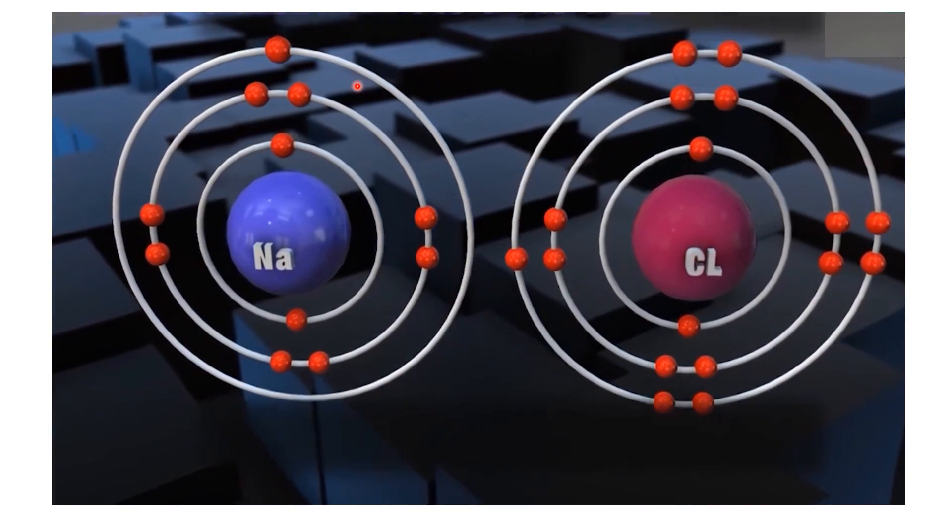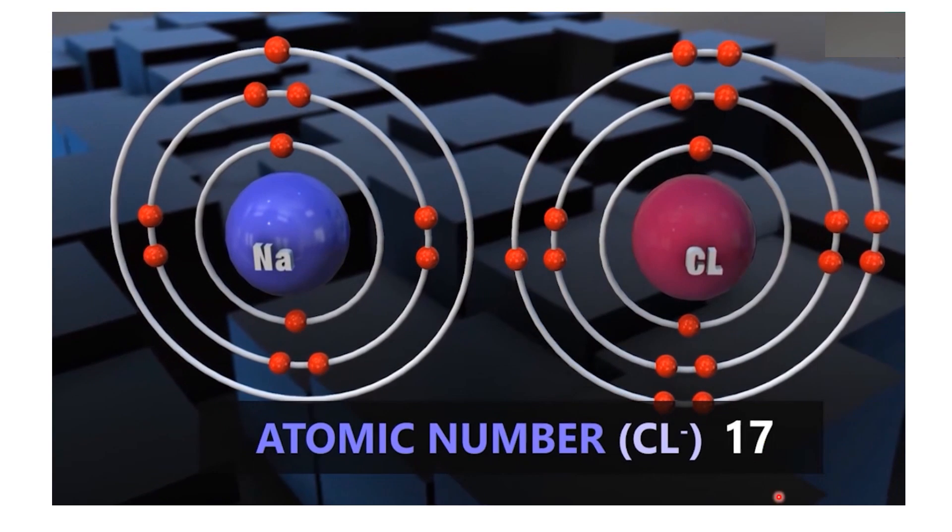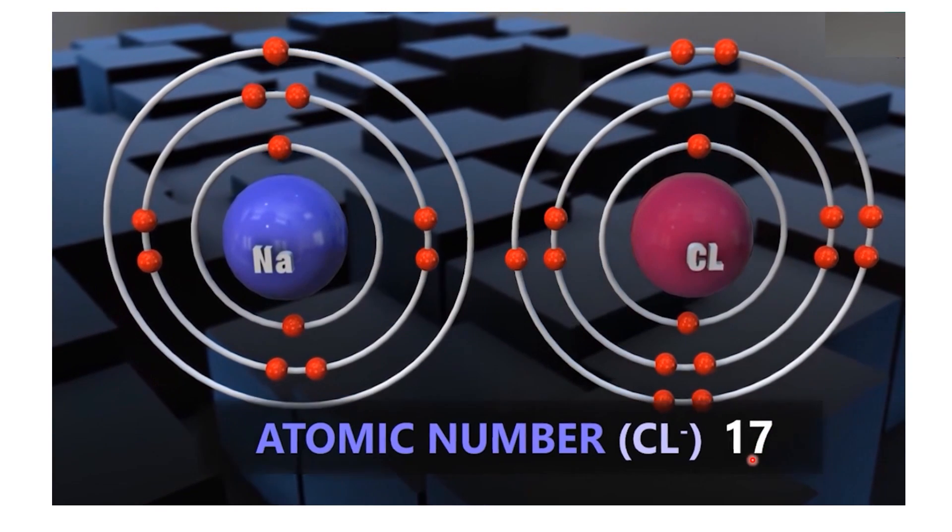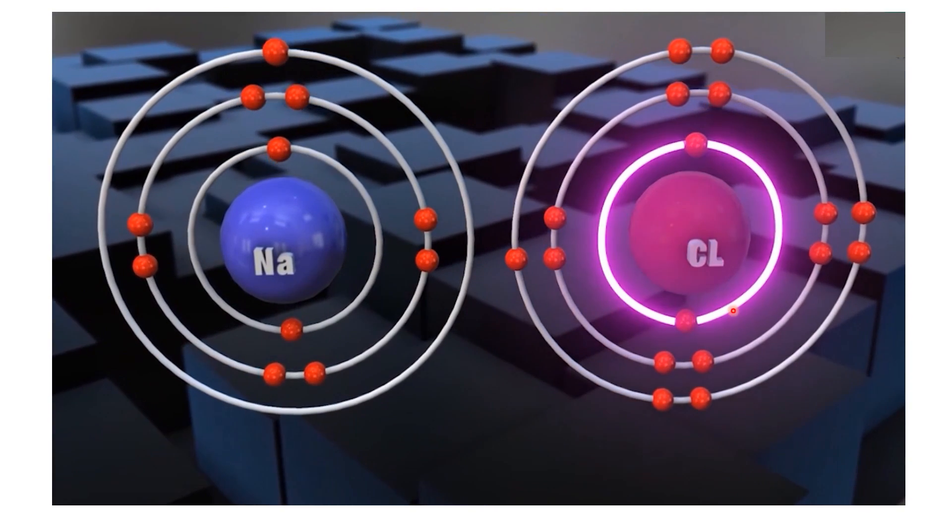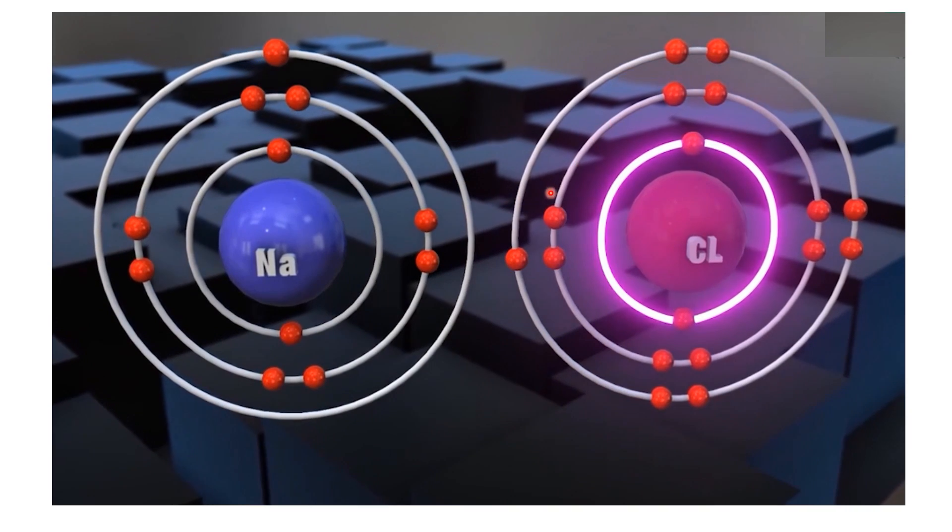Now, let's look at chlorine. A chlorine atom has 17 electrons. They're arranged as 2 in the K shell, 8 in the L shell, and 7 in the M shell.